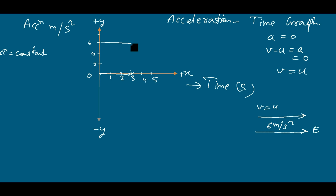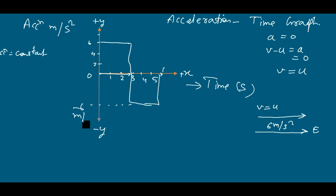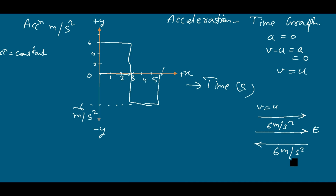Now I am giving another condition: suppose the acceleration becomes negative — it becomes minus 6 meters per second squared. This means the object was moving in one direction, and now it is returning back with 6 meters per second squared. This returning is represented by the negative sign of the acceleration.